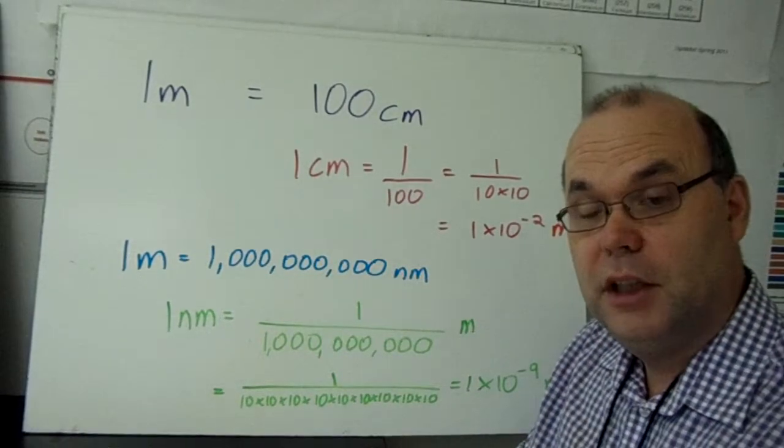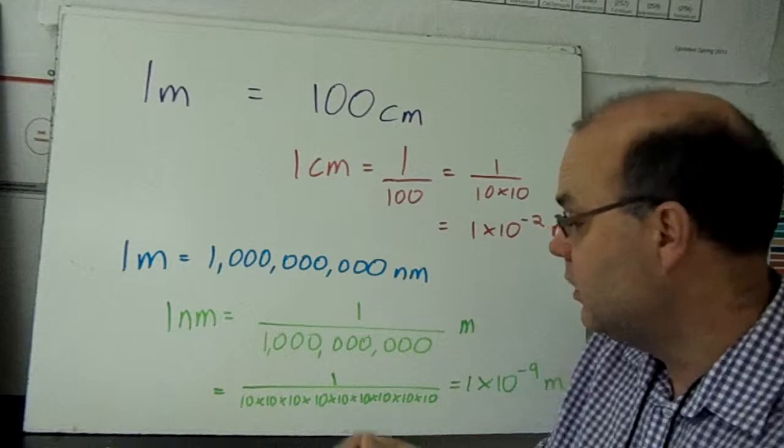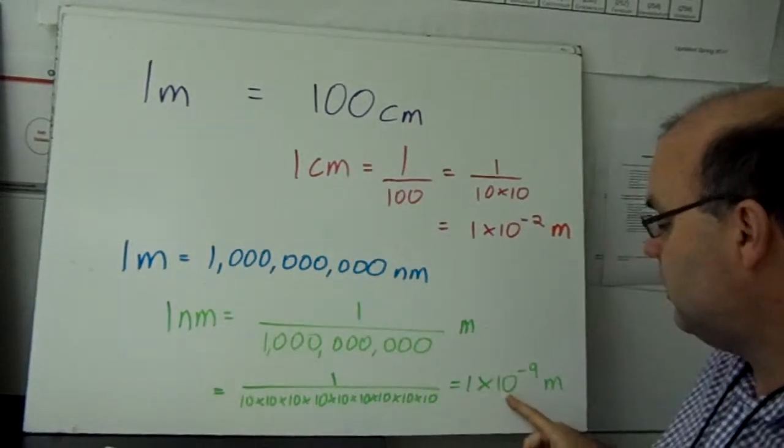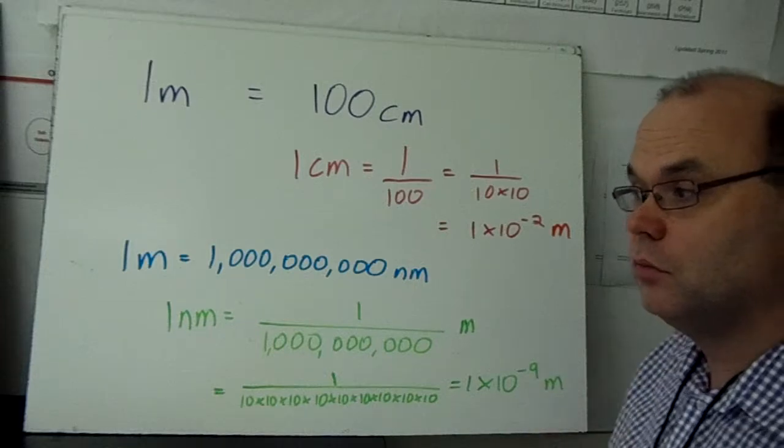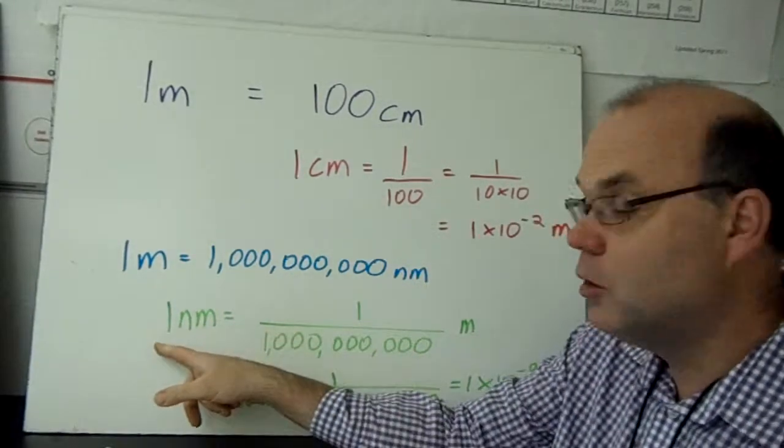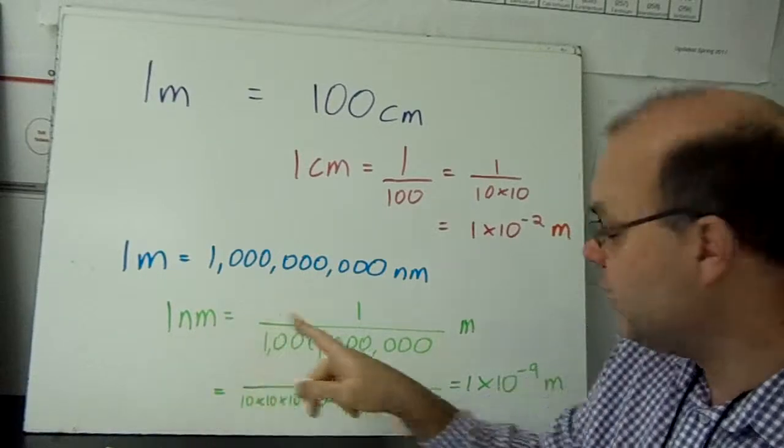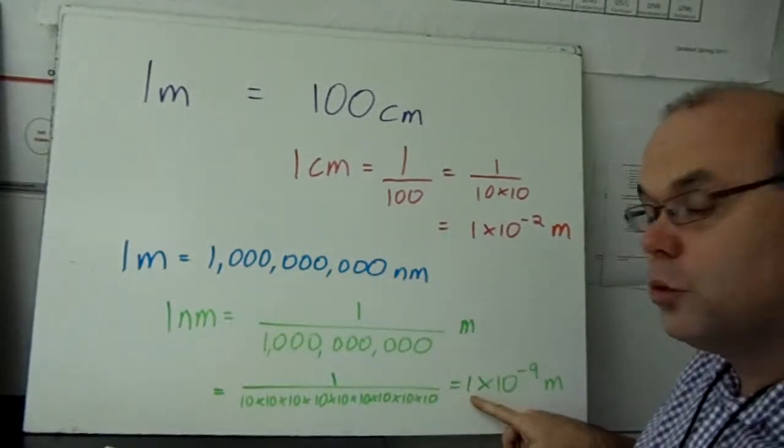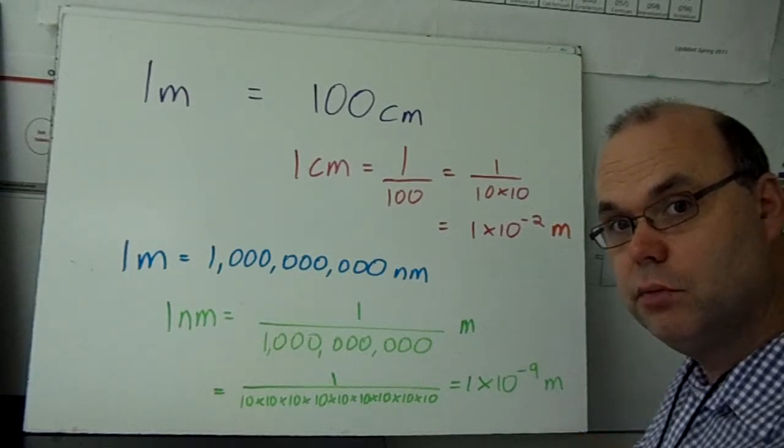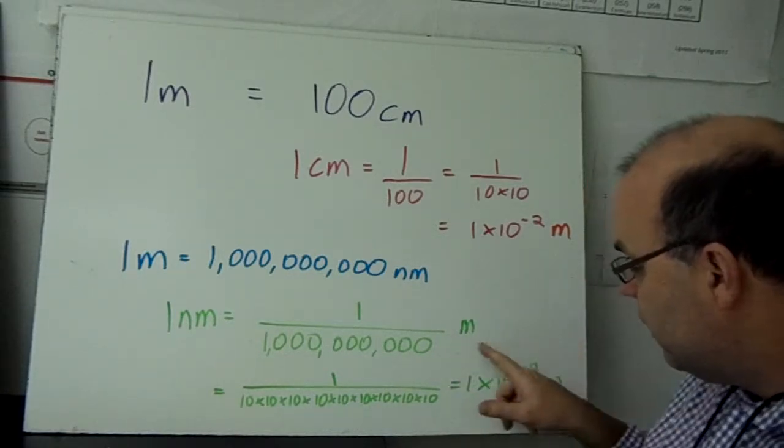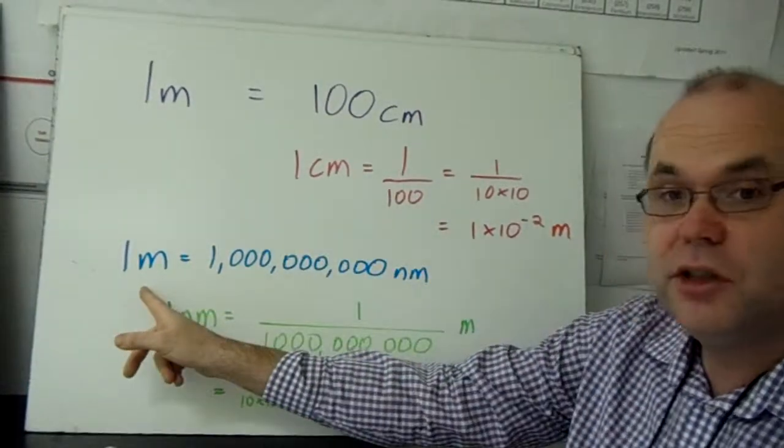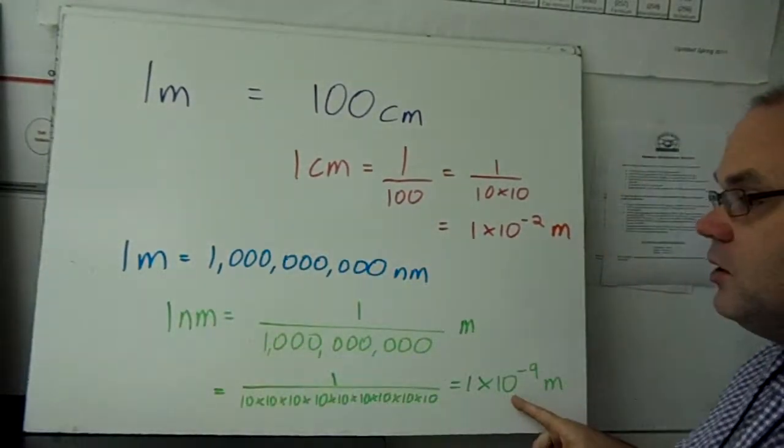So a shorter way to write that is 1 times 10 to the minus 9 meters. If you had 20 nanometers, it would be 20 times 10 to the minus 9 meters. If you had 723 nanometers, it would be 723 times 10 to the minus 9 meters. So to change your nanometers into meters, you multiply by 10 to the minus 9.